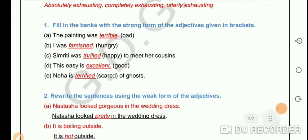Students, let's just do the exercise to understand this further. So fill in the blanks with the strong form of the adjectives given in the brackets. The painting was—strong form of the adjective bad is terrible. So we can say the painting was terrible.